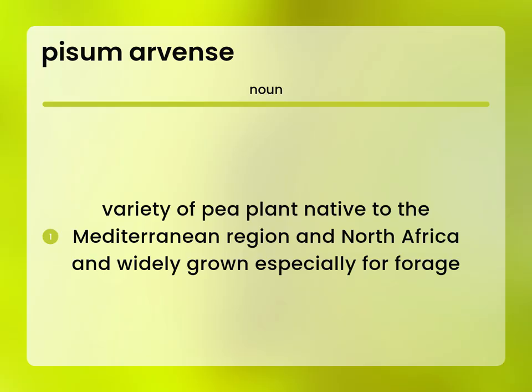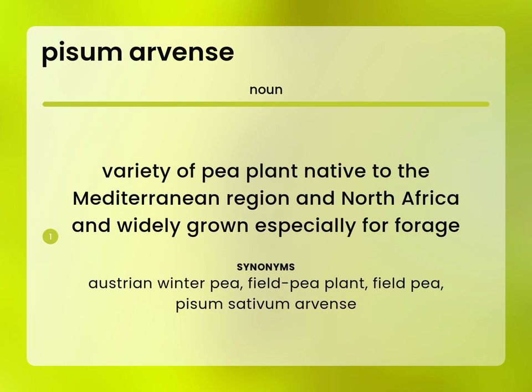A variety of pea plant native to the Mediterranean region and North Africa, widely grown especially for forage. Austrian winter pea, field pea plant, field pea — Pisum sativum arvense.